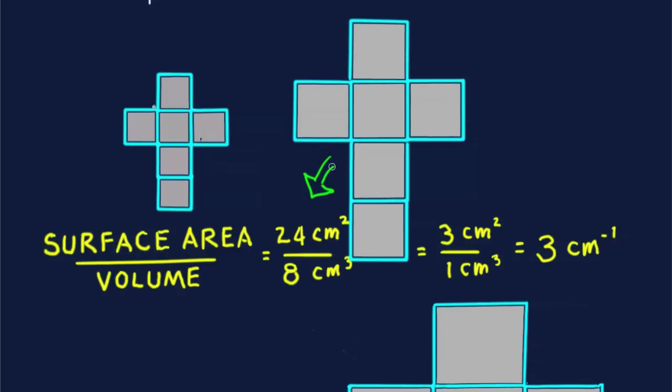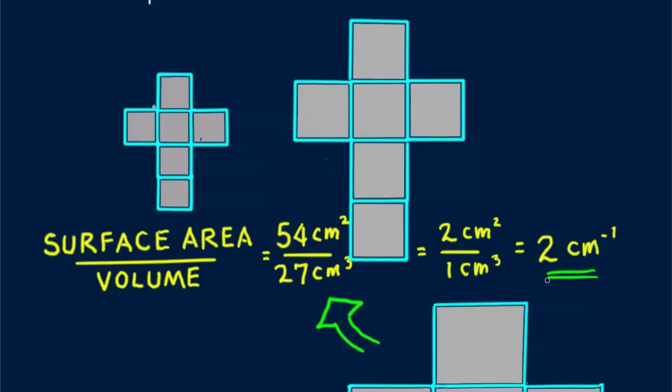And we look at the three by three by three centimeter cube. Again, we know that the total surface area is six times the cross section area. So six times nine equals 54 square centimeters. Recall that the volume is 27 cubic centimeters.